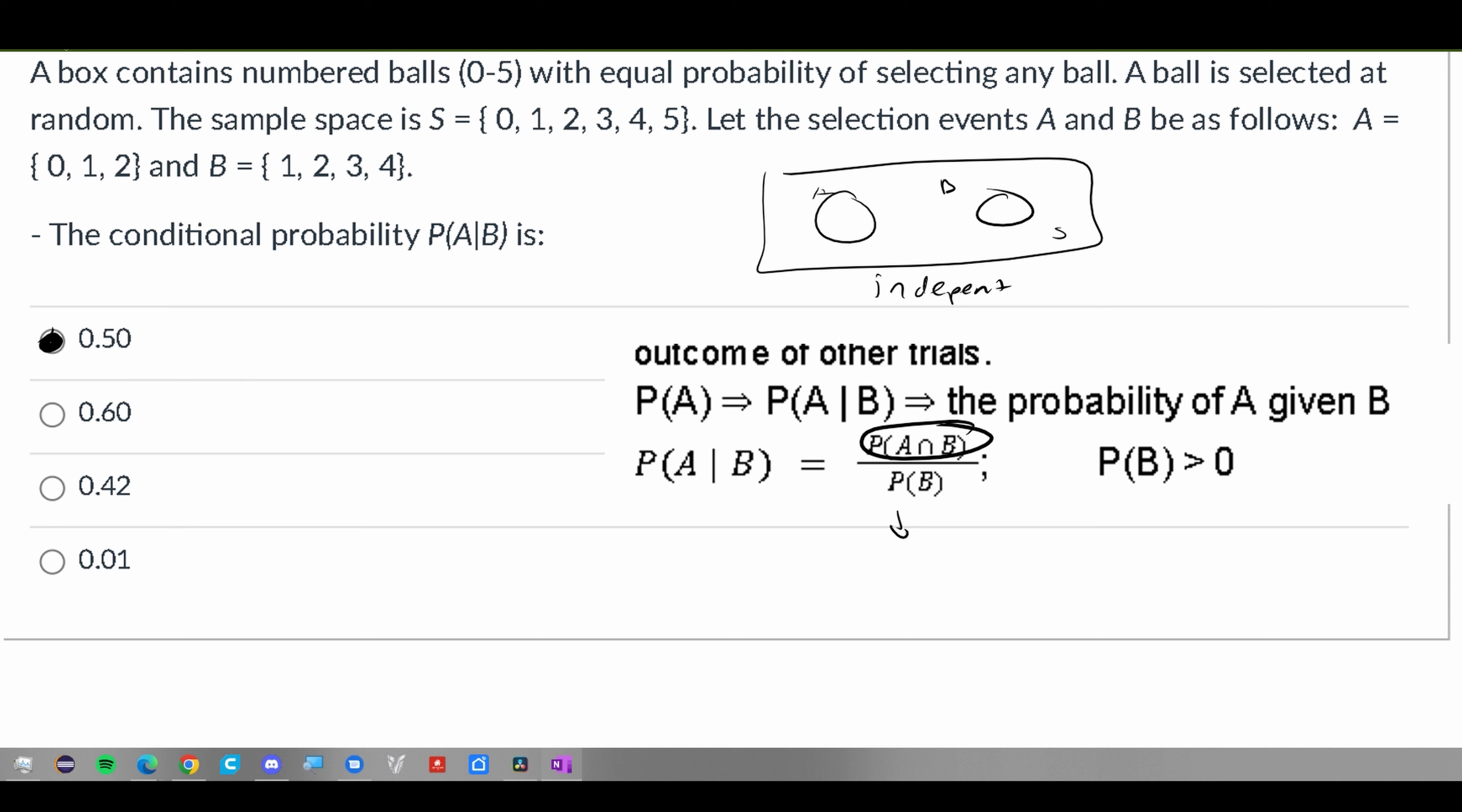It's going to be the probability of A times the probability of B over the probability of B. And so these can actually cancel out, and it's really just going to be the probability of A.